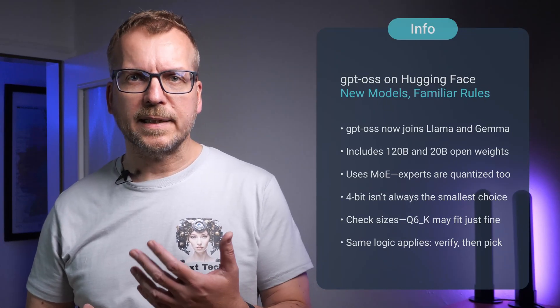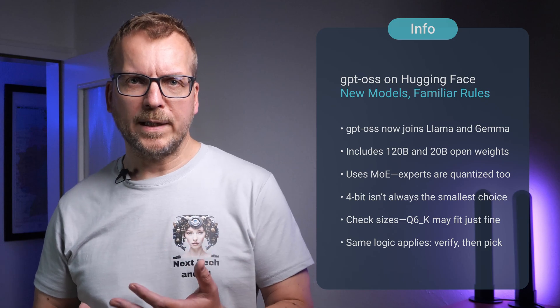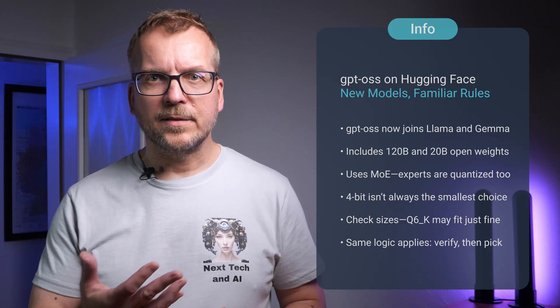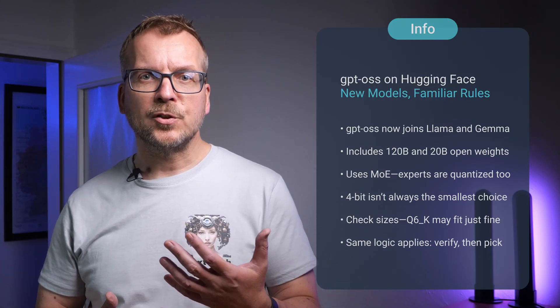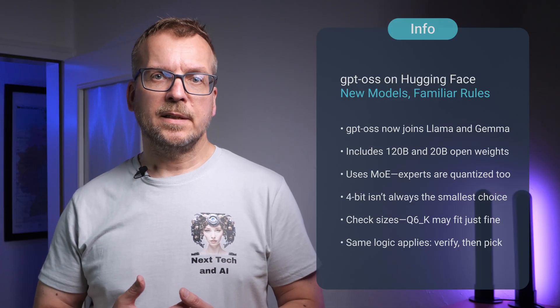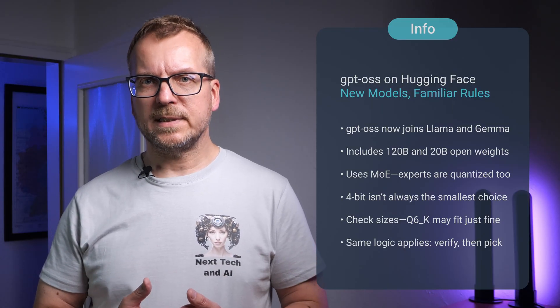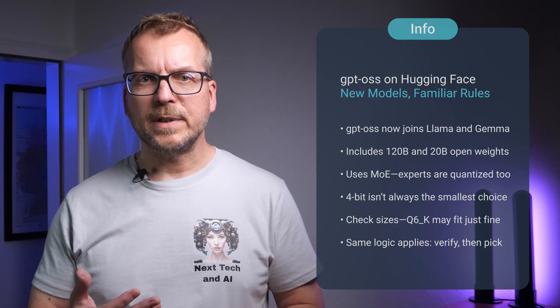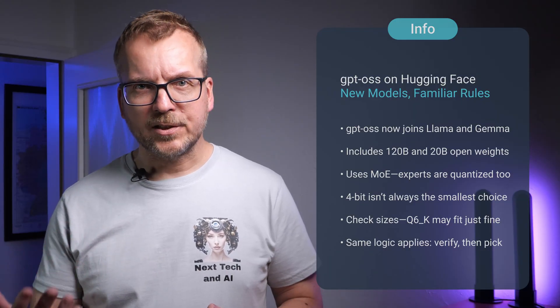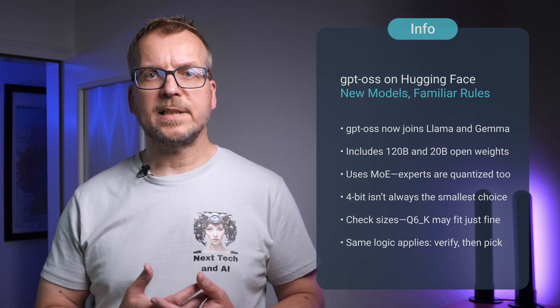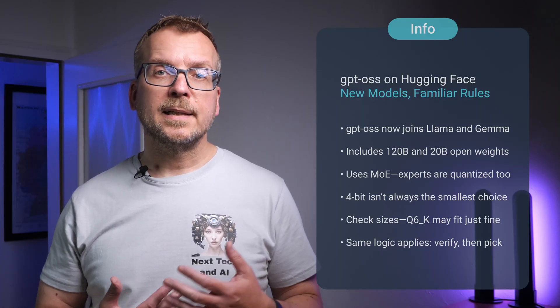OpenAI's open-source models now live in the same aisle as Llama and Gemma on Hugging Face. You'll see official open-weight releases — 120B and 20B — plus community quantizations. Here's the twist: these are mixture-of-experts models, so the 4-bit versions aren't dramatically smaller than you'd expect — the experts get quantized individually. If you're experimenting locally with the 20B model, don't automatically reach for Q4KM just because it sounds smaller. Check the actual file sizes first. You might find Q6K or even Q8_0 fits in nearly the same footprint with much better quality. Same file-selection logic — just verify the numbers before you assume.